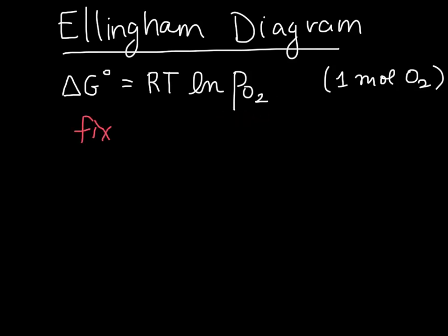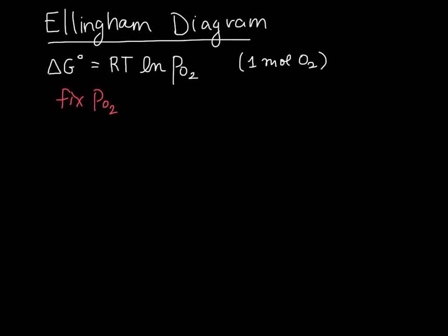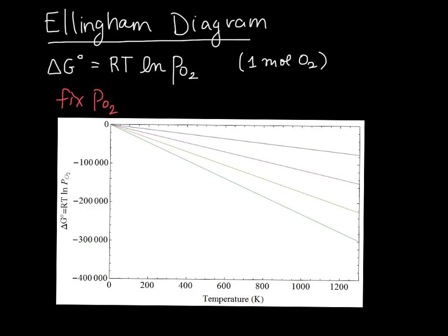We can take a look at what that looks like. So this is a plot here of ΔG starting at zero and getting increasingly more negative.